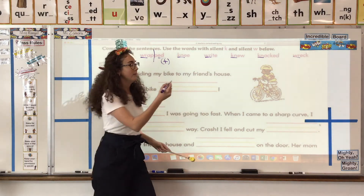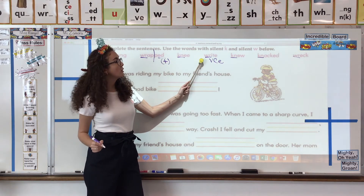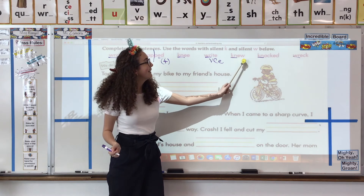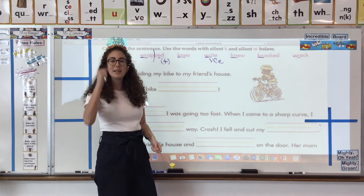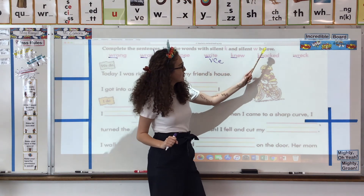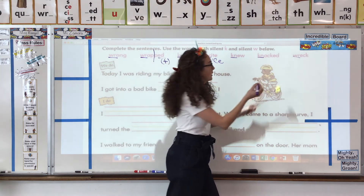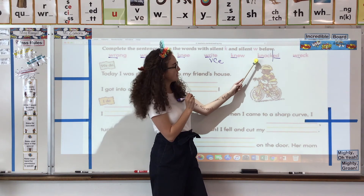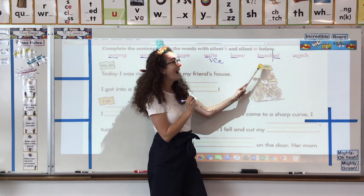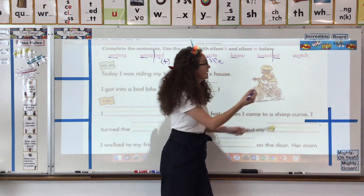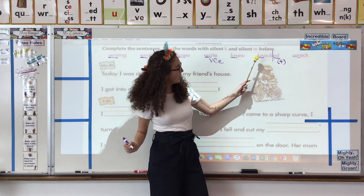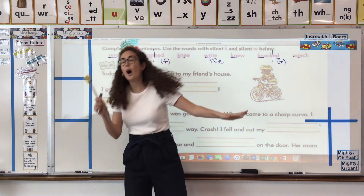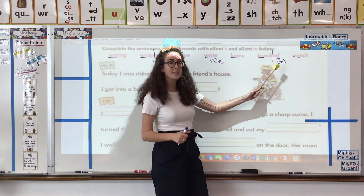Keep going — now we have knew. I knew something yesterday in the past — we saw this one before. Two more. We've got -ed again, that means it's another action that already happened. Decode the base word first — knock. And then -ed says tt — so the word is knocked. I knocked on the door. Or if you get knocked over, you fall over — something hits you and you fall. Knocked, in the past.